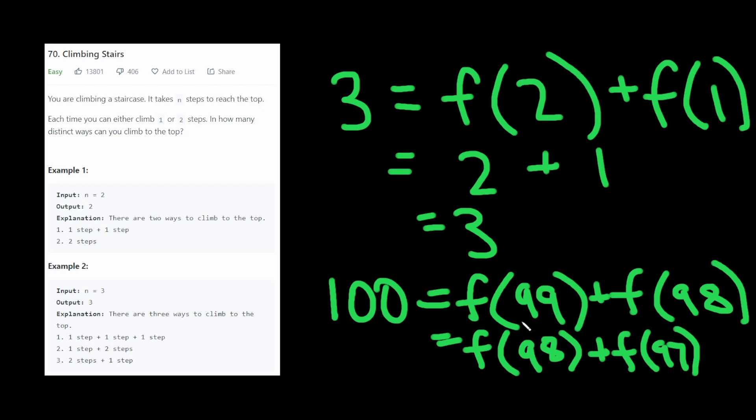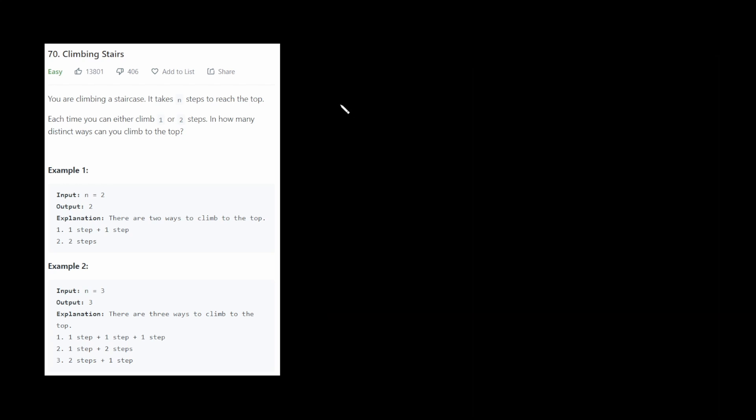So you can see there's a lot of recomputation of values that we've already seen. And this is the key here. Because we've already calculated some of these values, we want to actually store them in some data structure and then use them going forward. So instead of doing this recursively, let's think of this iteratively.